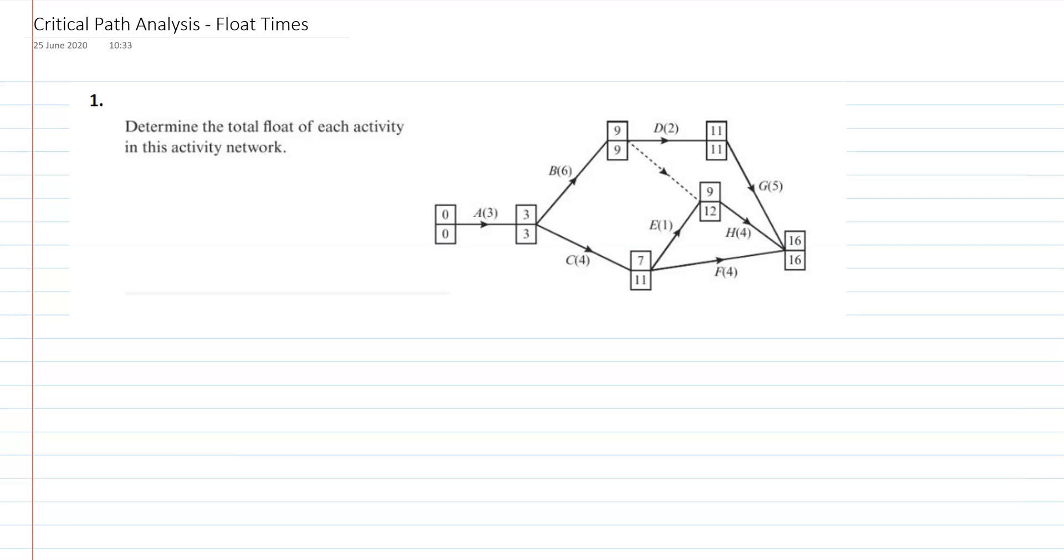So a total float of an activity is the amount of time that it can be delayed by without delaying the whole project, affecting the duration of the project. Critical activities have zero float. That's why they're critical activities. If you delay them at all, then it's going to affect the overall duration. But some activities have a little window where they can start, and as long as they end by the end of that window, it doesn't matter if it starts a little bit later. It'll delay that activity, obviously, but it won't affect the overall time of the project.